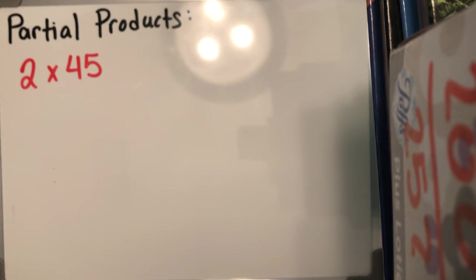Now, remember with partial products, we are writing down the entire product of a multiplication sentence. You're not just putting part of the product and then moving on to the next. You are putting all of the product down and then we're gonna add it.